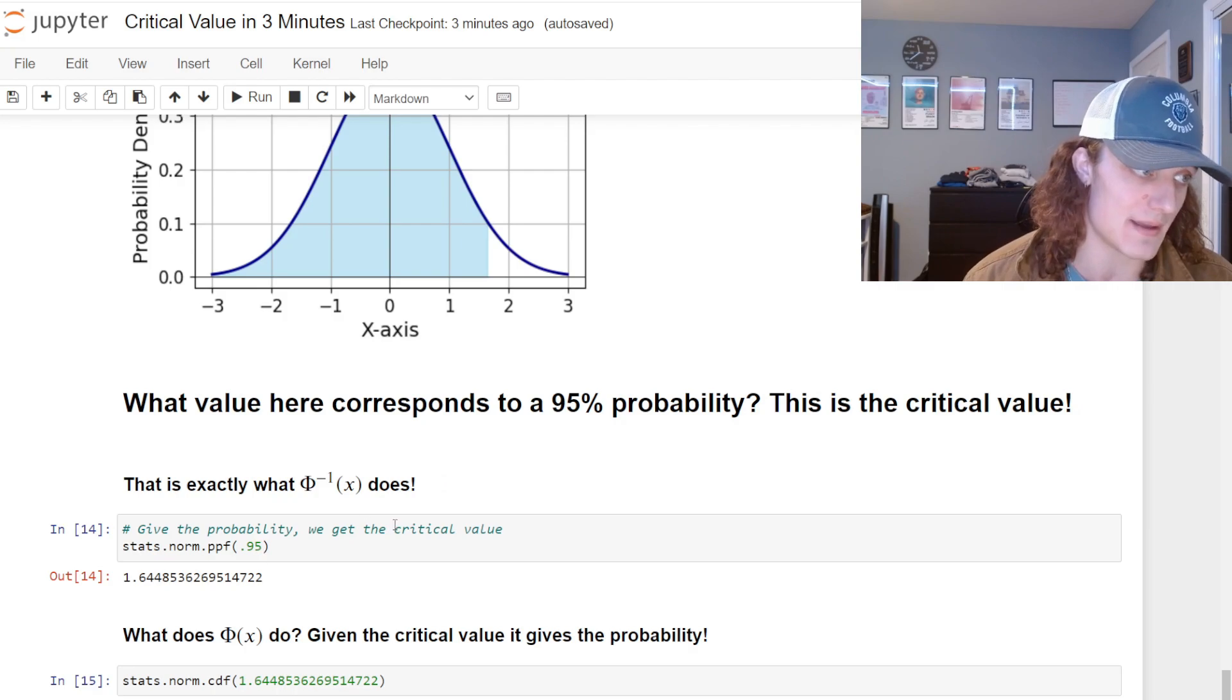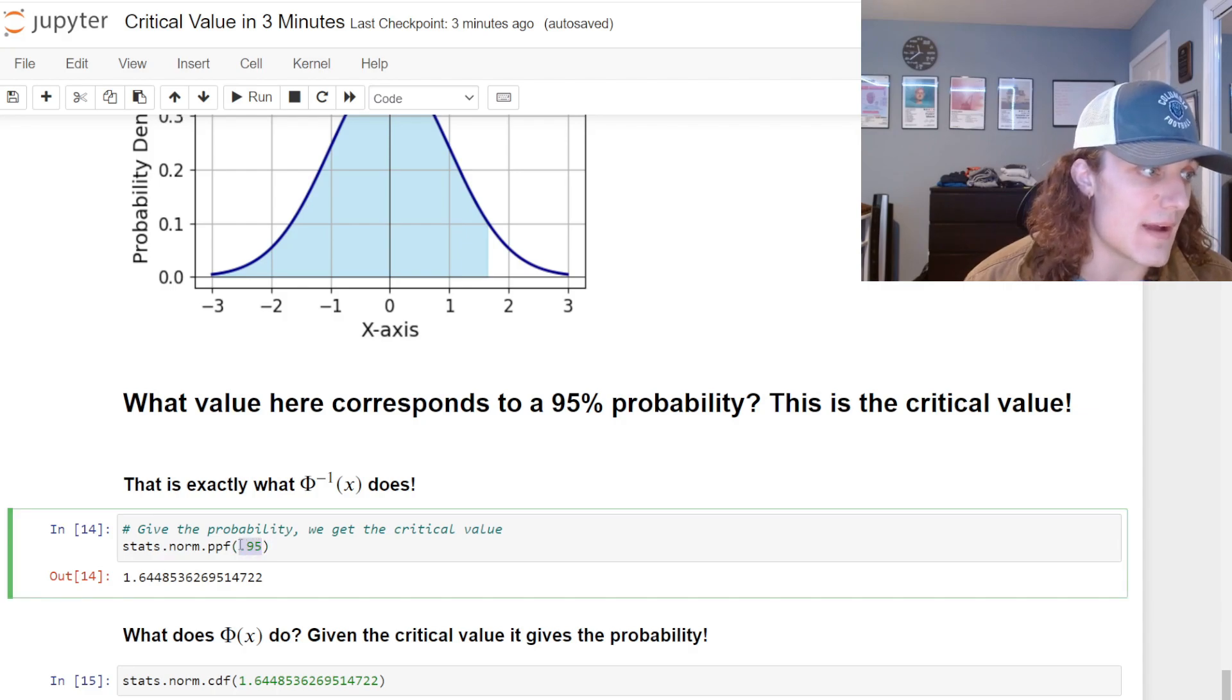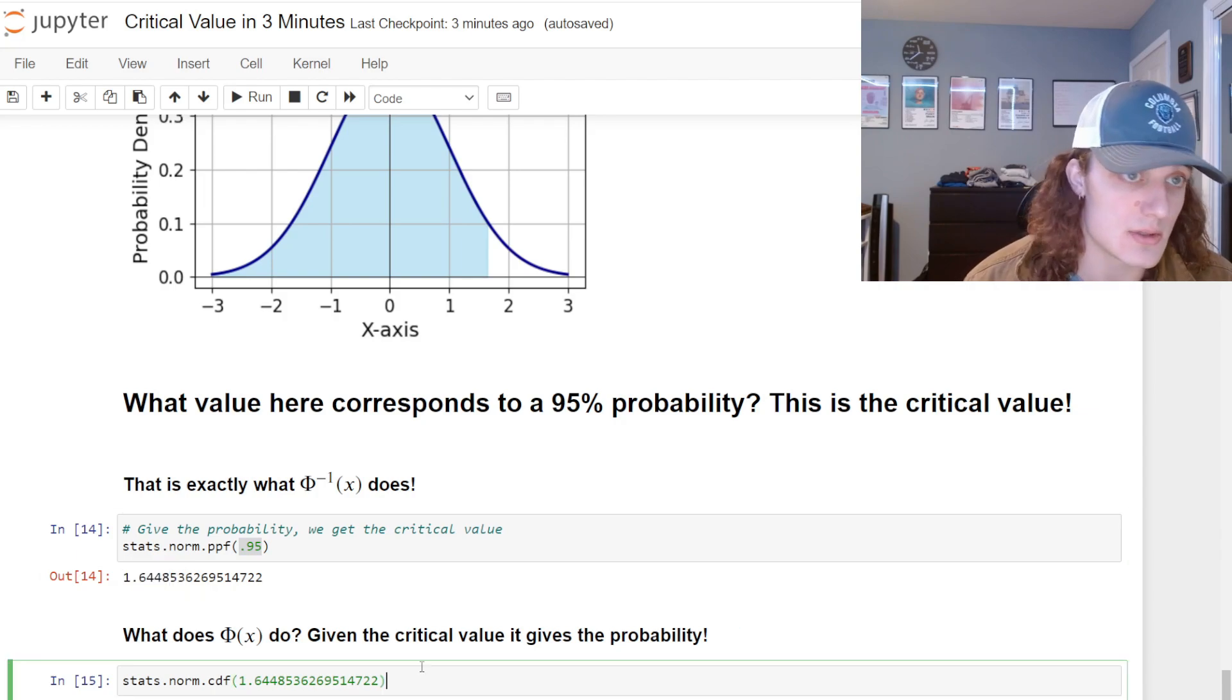So if I go ahead here and say stats.norm.ppf - that's the inverse cumulative normal distribution - I'm going to say what value right here is going to give me a 95% probability? And it turns out that that value is approximately 1.65.